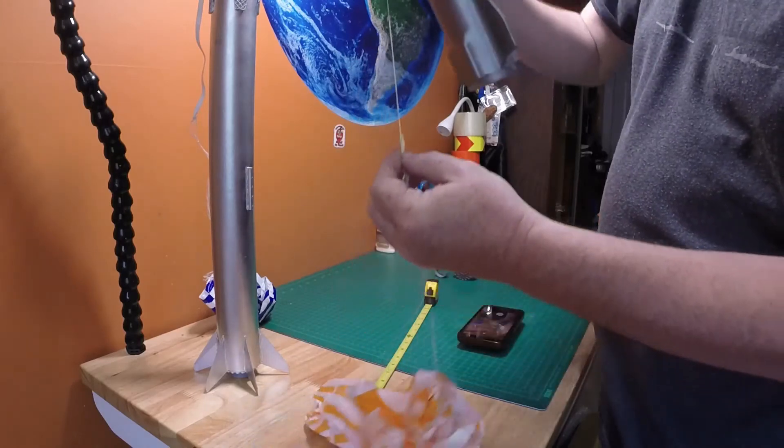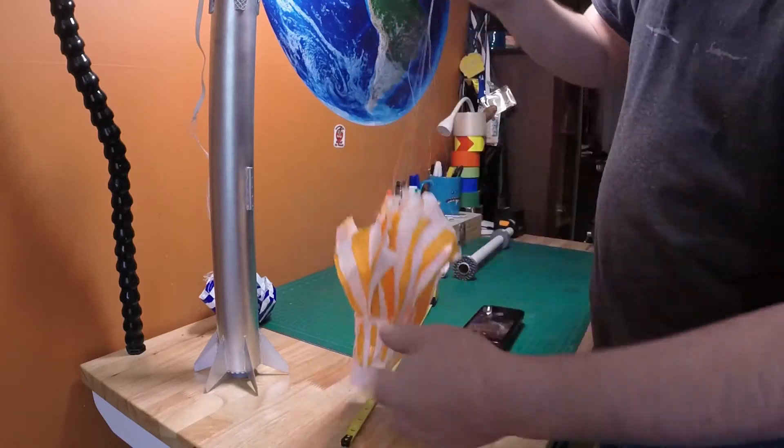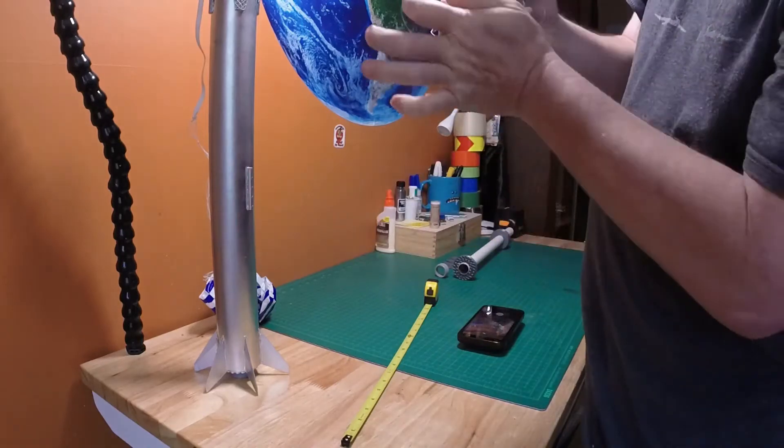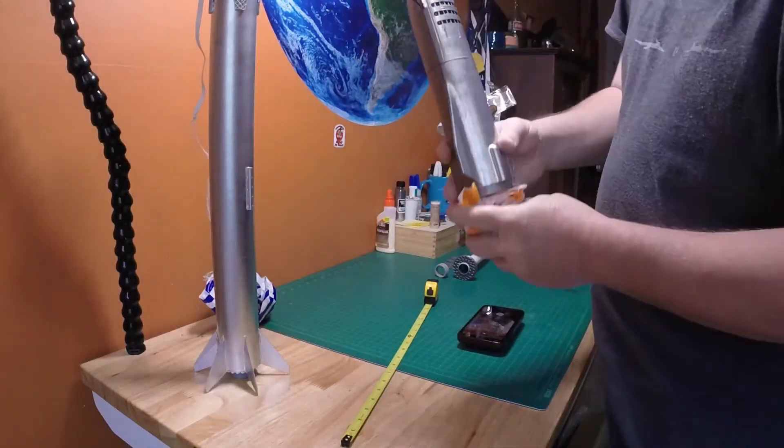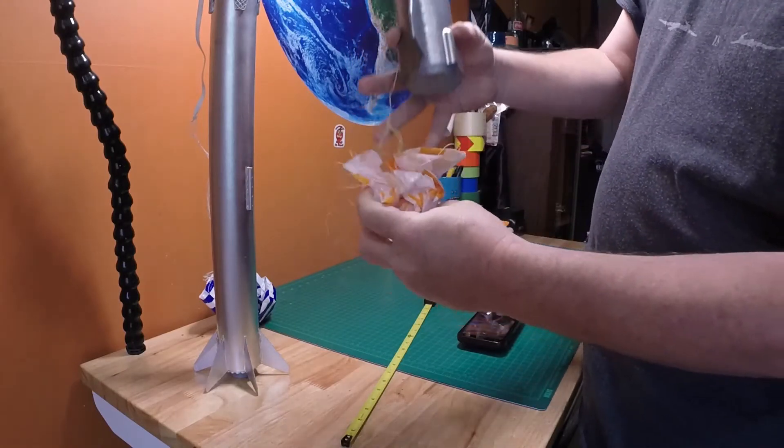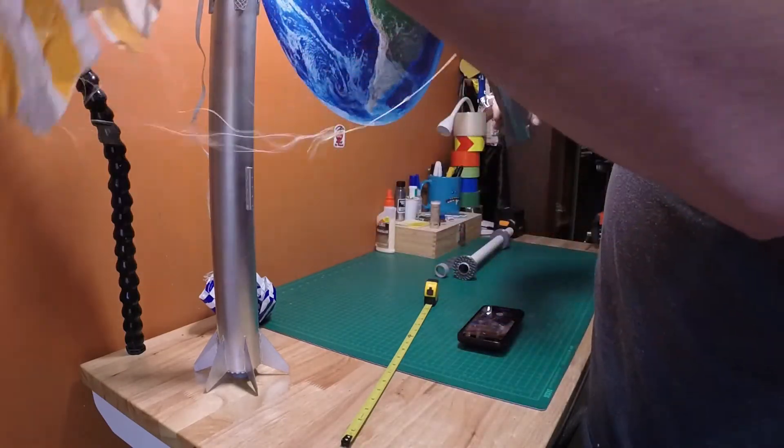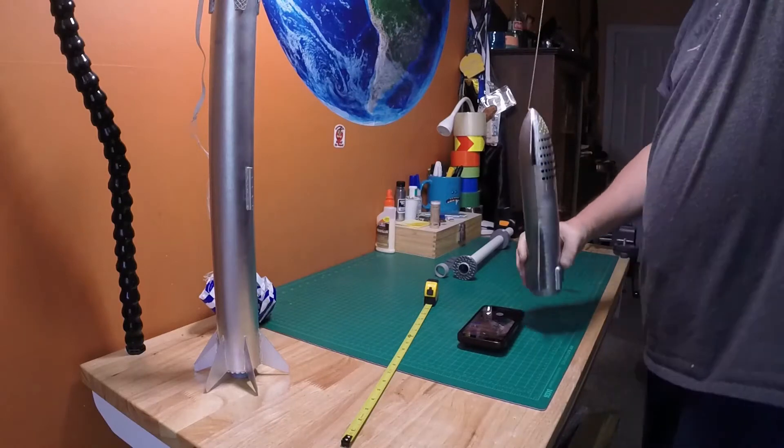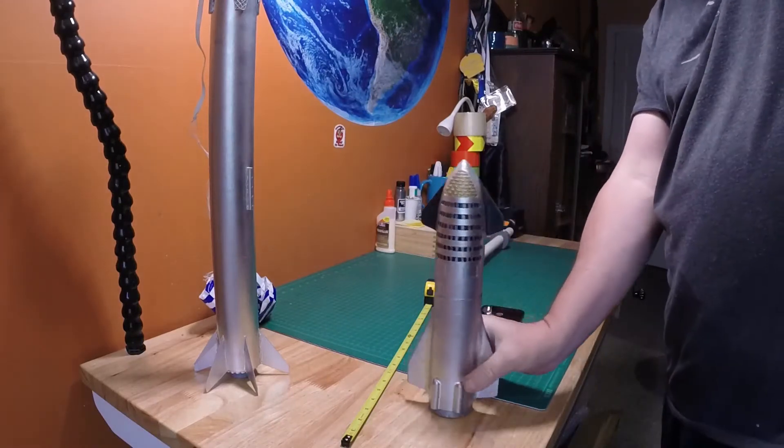And then that line, instead of a shock cord, it's just a line that goes along the side, and then you pack the chute underneath it and stick it in the top of the tube. So when the charge fires, the actual Starship separates, comes down, and basically the parachute brings it down and lands it kind of like on its bottom, or usually it just kind of crashes.